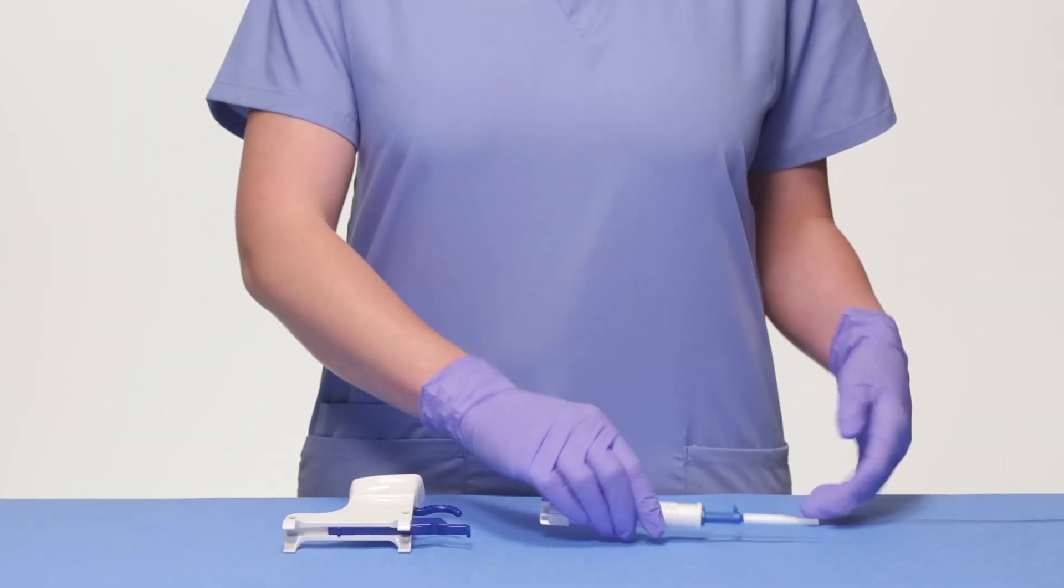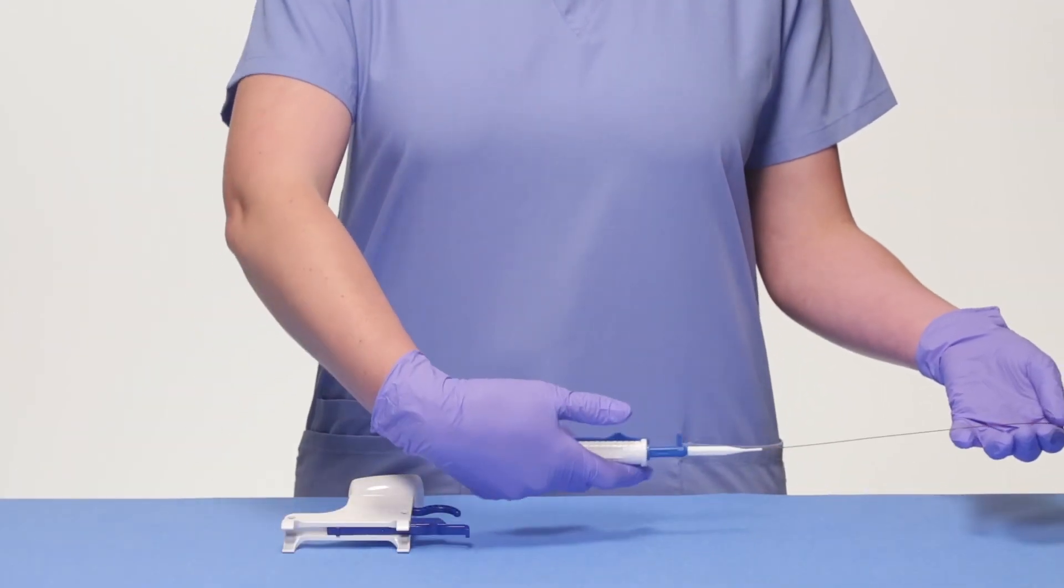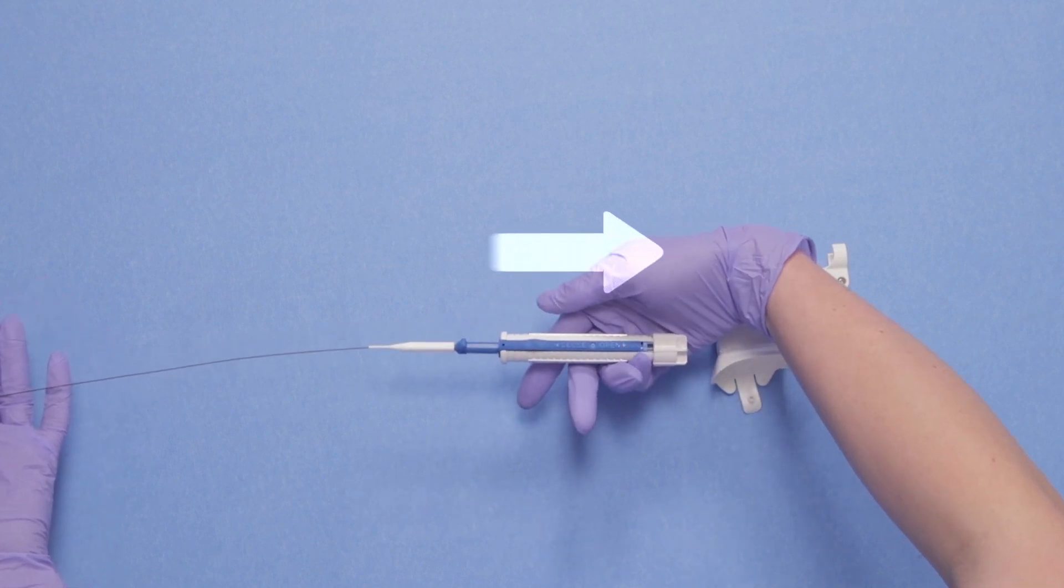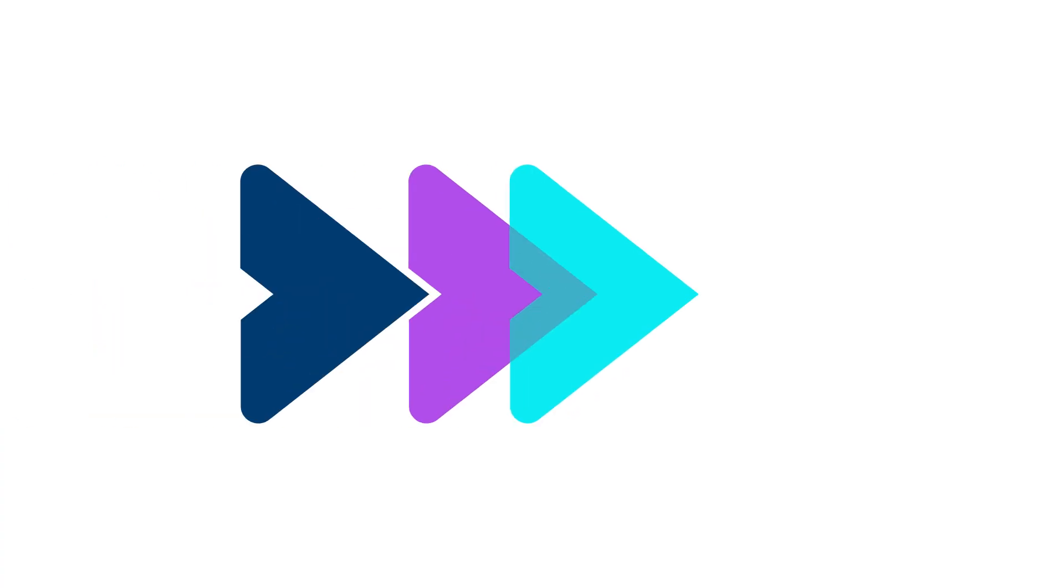The first step is to connect the LithoVue Empower device to a nitinol basket. To secure the retrieval device onto LithoVue Empower, the basket must be in the fully opened position by sliding the handle back completely.